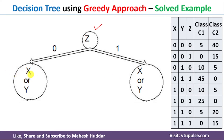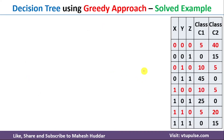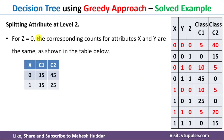At each branch we need to select either X or Y. To decide, we again calculate the classification error of X and Y — the one with the minimum error will be chosen. When Z equals 0, we compute the contingency table for X and Y. Similarly, when Z equals 1, we calculate the contingency table for X and Y and compute the classification error.